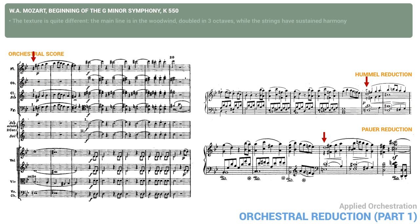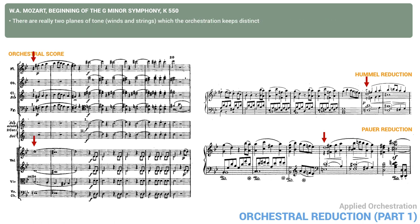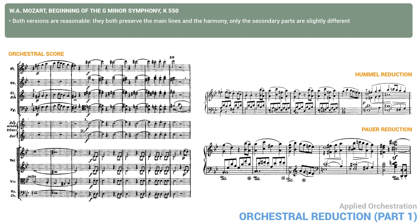Now let's look at measure 14. Here the texture is quite different: the main line is in the woodwind, doubled in three octaves, while all the strings have sustained harmony. It would be very awkward for the pianist to play all the notes here with all the doublings. In addition, there are really two planes of tone — winds and strings — which the orchestration keeps distinct. The left hand can play the bass and the little counterpoint in the viola, though the lower octave double bass part has to be ignored. The right hand can play the woodwind line, although not in three octaves. The Hummel reduction starts the woodwind line doubled in octaves but then abandons the doubling in measure 15 to fill out the middle harmony. The Power version keeps the octaves, except for the eighth notes, just including the C-sharp on the first beat. Both versions are reasonable — they both preserve the main lines and the harmony, with only the secondary parts slightly different.